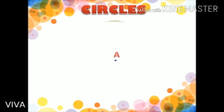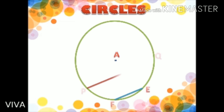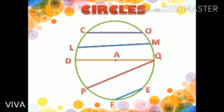Consider a circle with center A having different chords as we can see here. Let us name these chords as CO, LM, DQ, PQ and FE, where DQ is also a diameter of the circle.